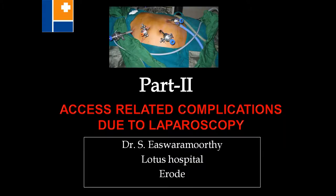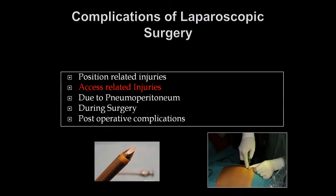Part 2: Access-related complications due to laparoscopy. The complications of laparoscopic surgeries are classified under five headings: position-related injuries, access-related injuries, problems due to carbon dioxide pneumoperitoneum, complications during surgery, and postoperative complications. The most important among these are access-related injuries.